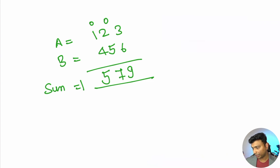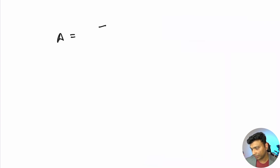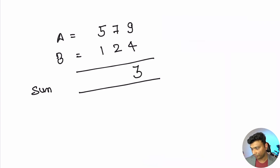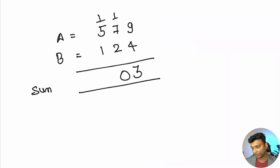Now suppose a is 579 and b is 124. We add 9 plus 4 as 13, write 3 with carry 1 going to the left neighbor. Then 7 plus 2 is 9, plus carry 1 gives 10, so we write 0 with carry 1. Then 5 plus 1 is 6, plus carry 1 gives 7. So our output is 703.